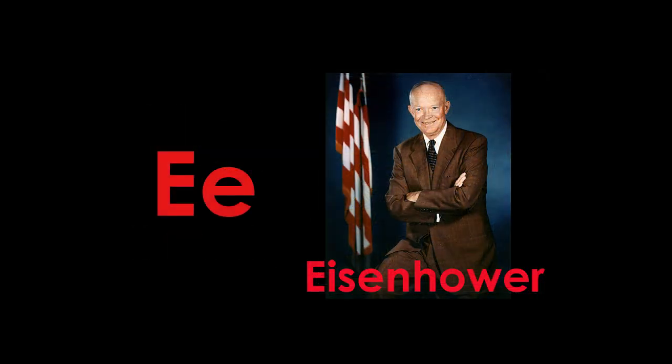E is for Eisenhower, and more specifically for President Eisenhower. Dwight D. Eisenhower grew up in Abilene, Kansas, and became the 34th President of the United States. While he was president, Eisenhower created the interstate highway system. Many people drive across the great state of Kansas on interstate highways today thanks to President Eisenhower. I bet many of you have ridden on them too.